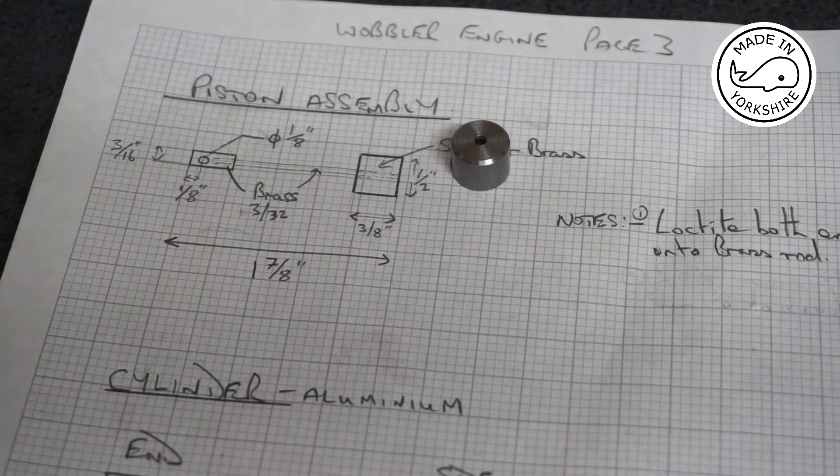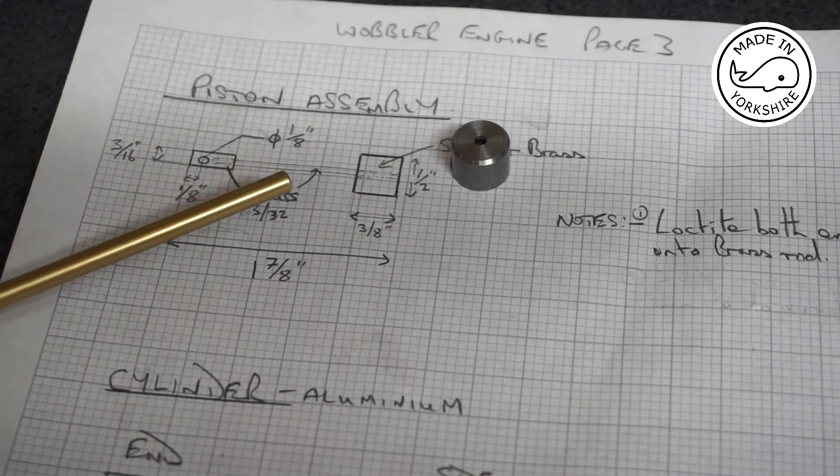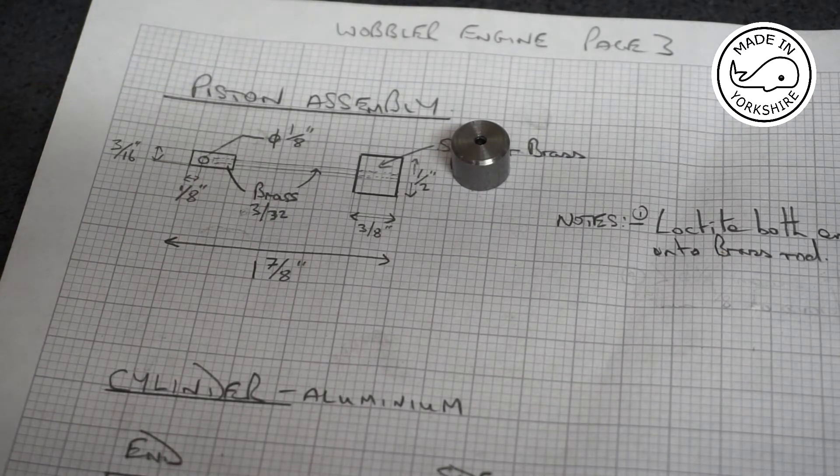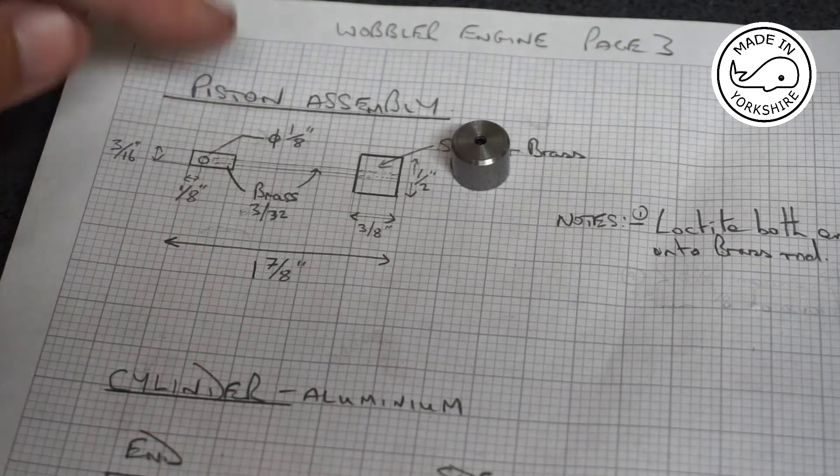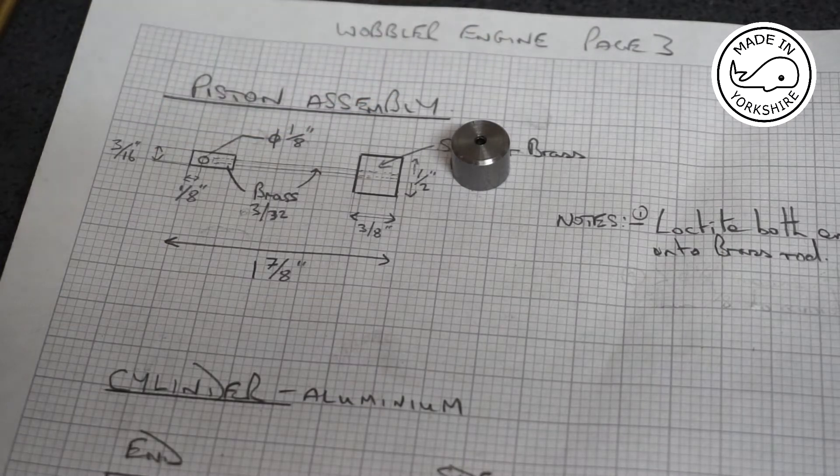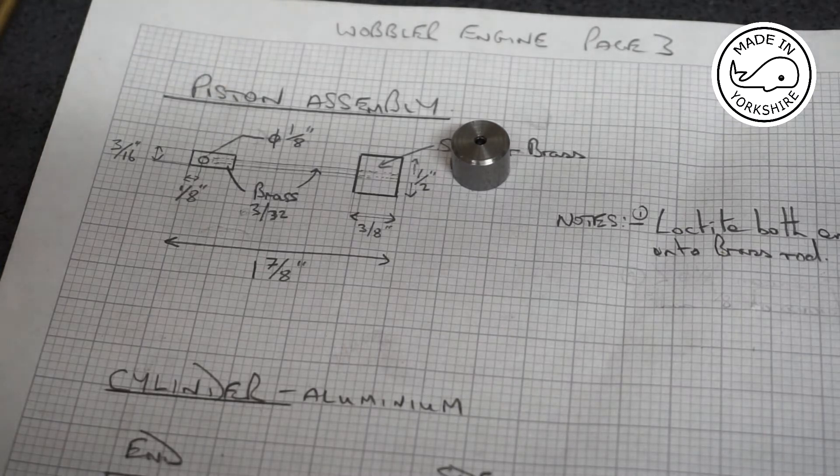It's three sixteenths of an inch in diameter and I've got a piece of brass here that is the same spec and it's about 0.4 of an inch long. It needs to be drilled down one side by three thirty-seconds of an inch and across by an eighth of an inch.